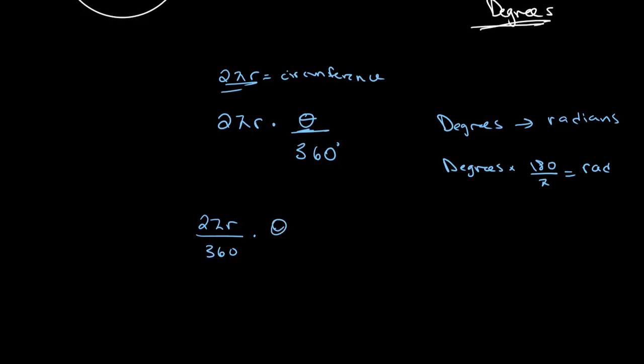If we take theta, which is initially in degrees, and we want to convert this into radians, we multiply by 180 over π. This portion is now our angle in radians, and we can simplify this equation using basic algebra. Pi cancels out, we can take out 180, and what you're left with is r times theta. So the value for our arc length is r multiplied by theta.